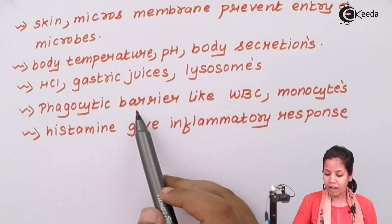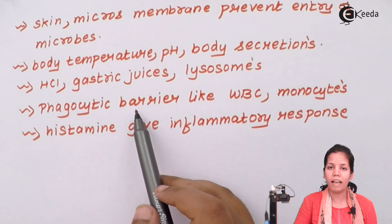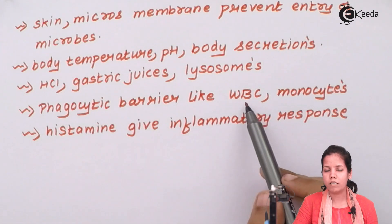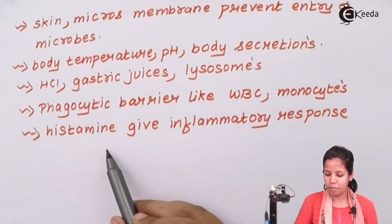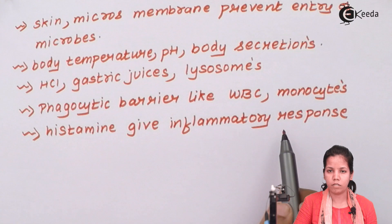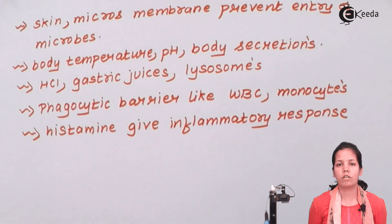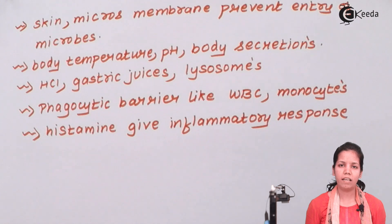Now, phagocytic barriers — when I say phagocytic, those are organisms which actually engulf; they totally eat the harmful microorganisms. For example, WBCs or white blood cells, monocytes — a type of WBC. Meanwhile, histamines give inflammatory responses. In this part of the chapter, what we came across was what innate immunity is and how innate immunity actually works. I hope you are very clear about this concept of innate immunity. Thank you.